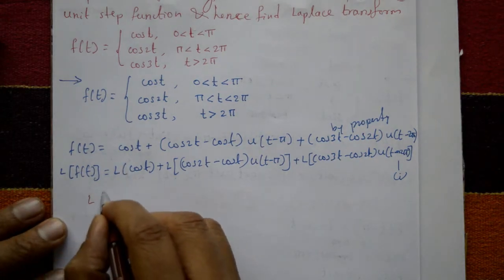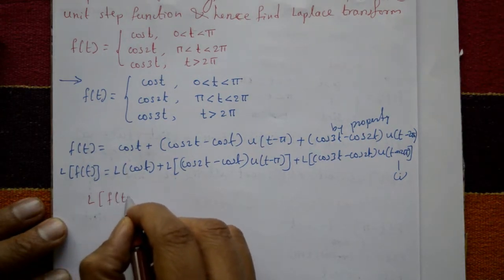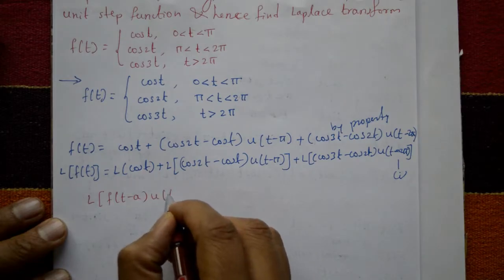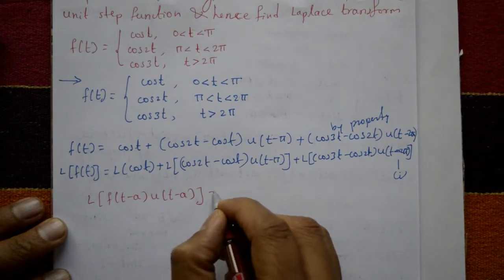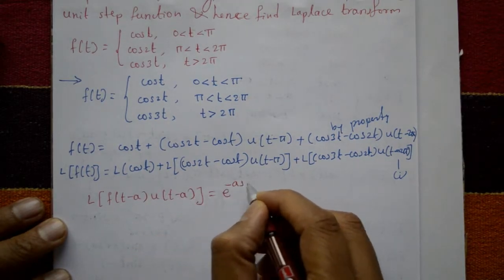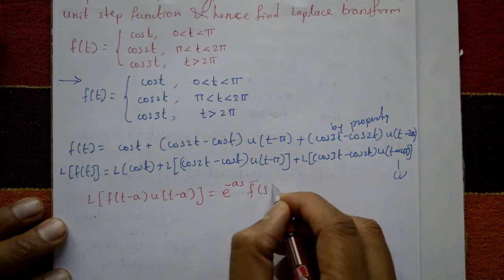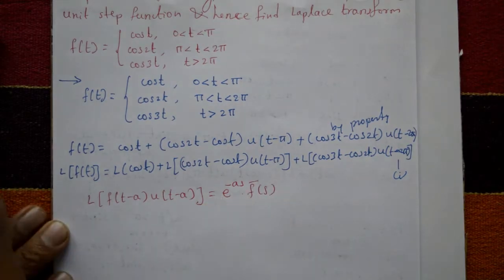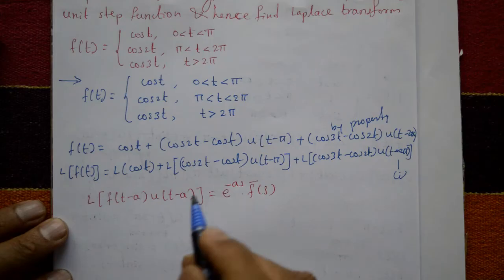The property to use is: L{f(t − a) · u(t − a)} = e^(−as) · F̄(s). Now apply this property to the second term.